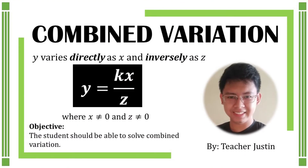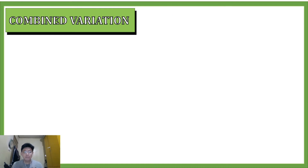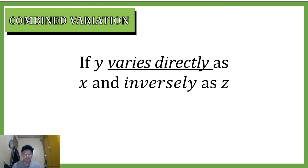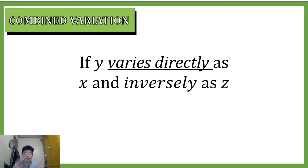Good day everyone, welcome to Math with Teacher Justin. Today's topic is combined variation. We'll talk about combined variation, which involves the phrase 'y varies directly as x and inversely as z.' We have the words 'directly' and 'inversely,' which is why we call it combined variation — it is a combination of direct and inverse variation.